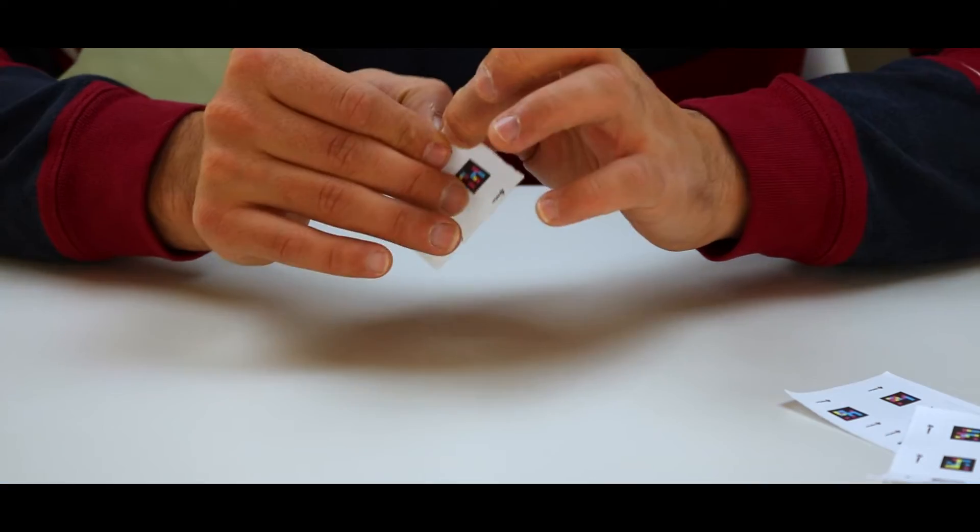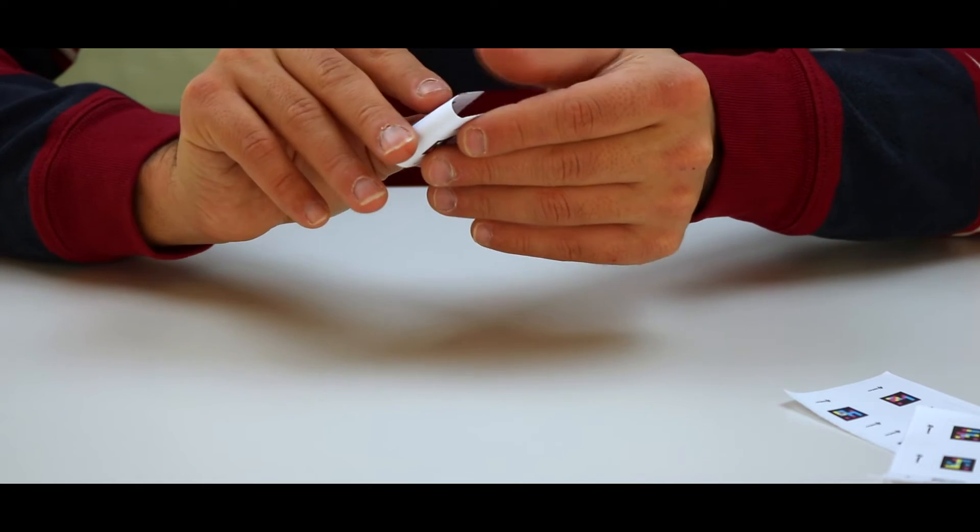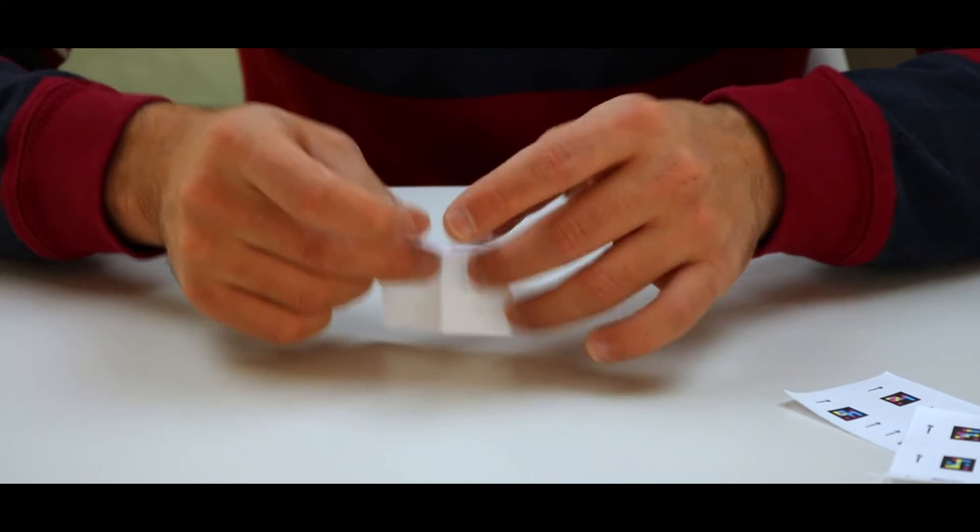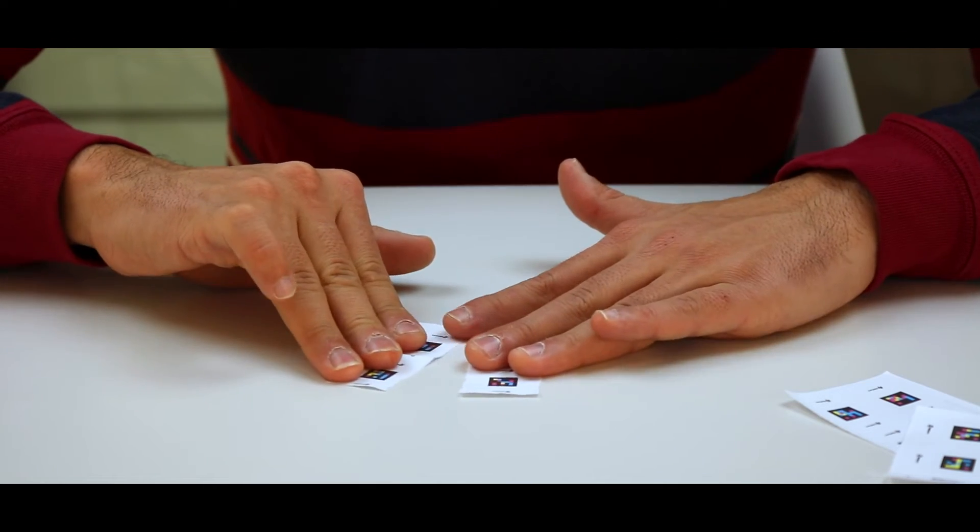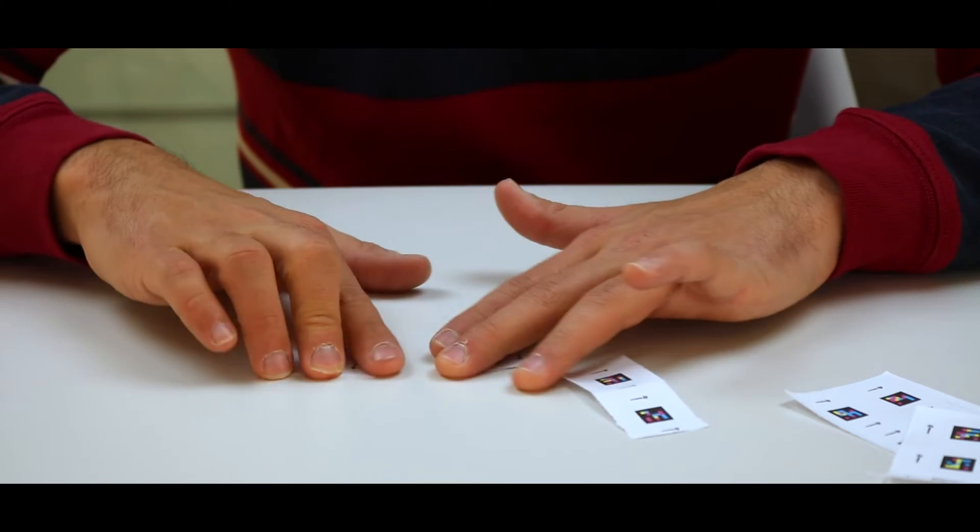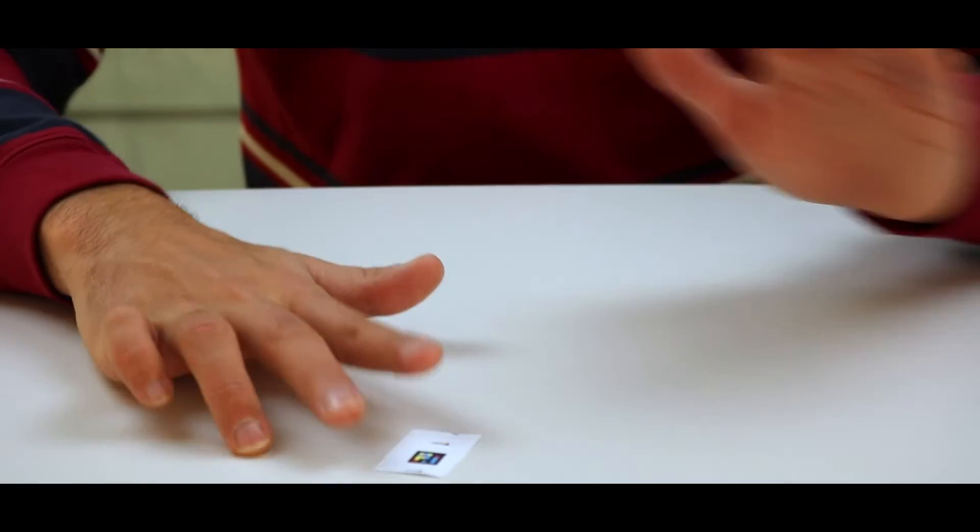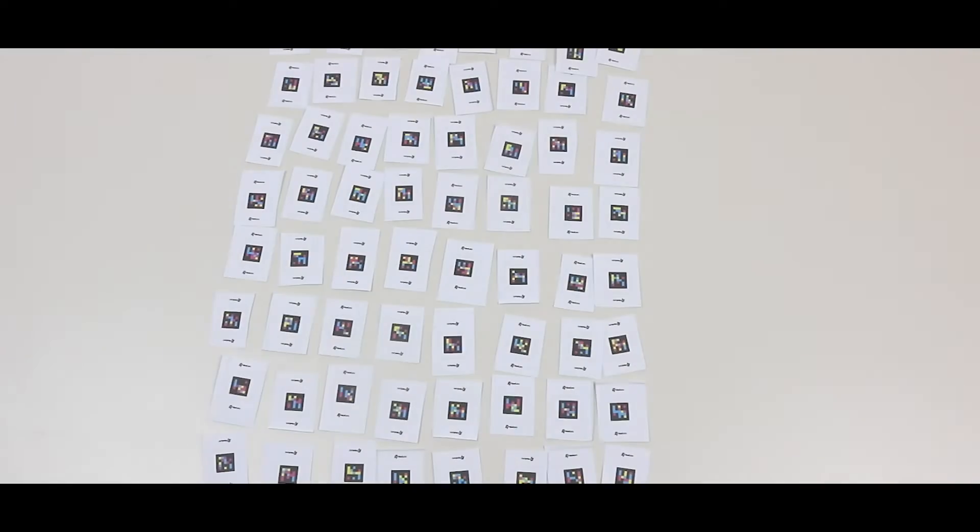On this occasion, fold each of these 16 pieces again to obtain four pieces from each one. Count them. You now have 64 small codes that are ready to be used.